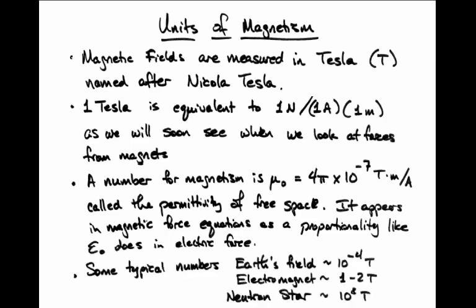For your reference, some typical numbers for magnetic fields are that Earth's magnetic field near the surface is approximately 1 part in 10,000 of a tesla, or 10 to the minus 4 tesla. A very strong electromagnet is on the order of 1 or 2 tesla. The magnetic fields at the interior of a neutron star, however, can be as large as nearly a tenth of a billion tesla.